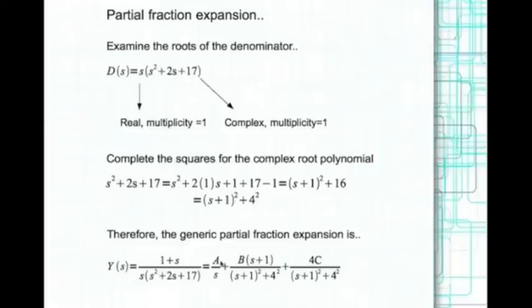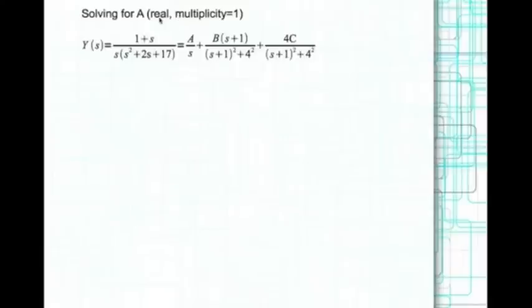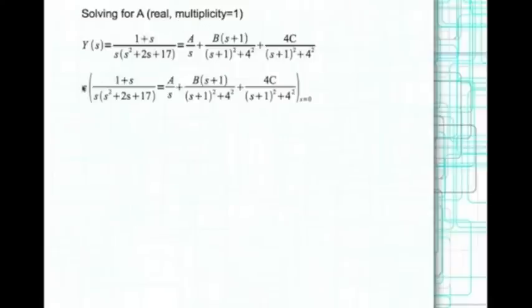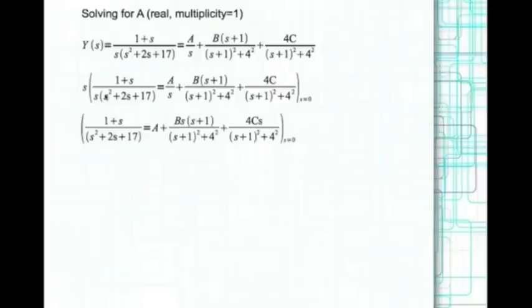We now solve for the coefficients. For coefficient A — the real root with multiplicity 1 — we multiply both sides by s and evaluate at s = 0. The s terms cancel, and evaluating at s = 0 gives A = 1/17.